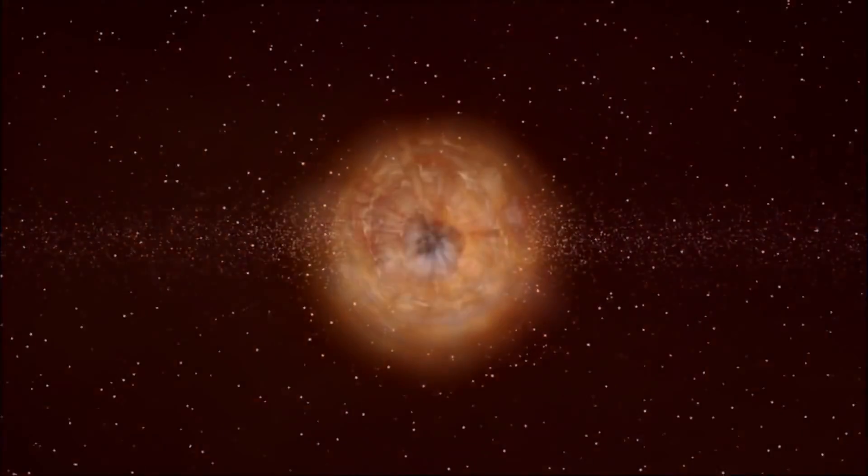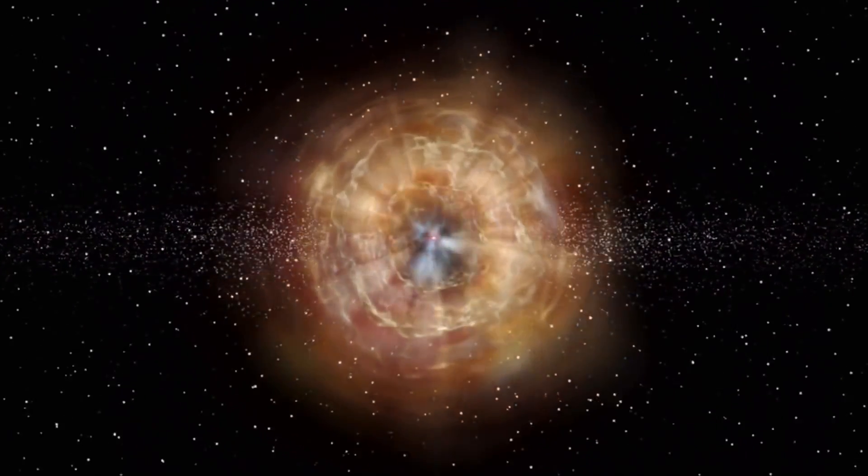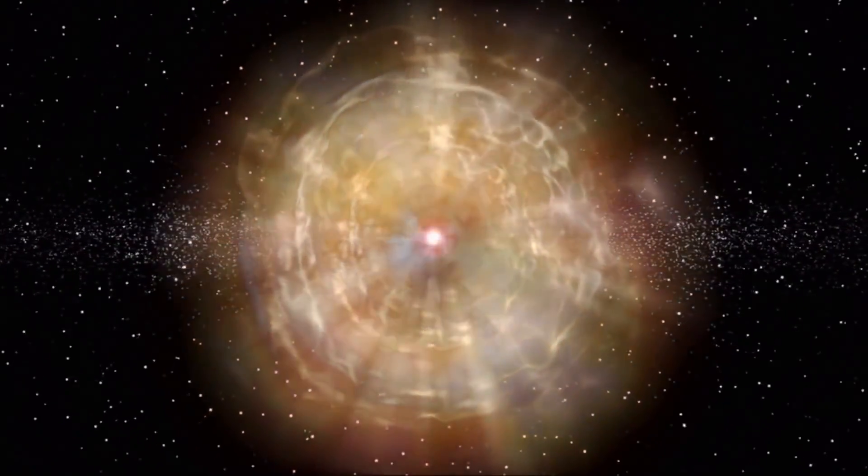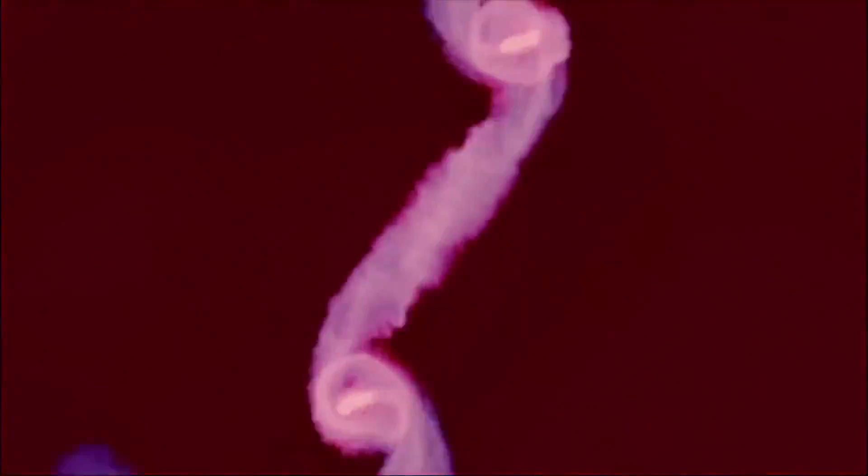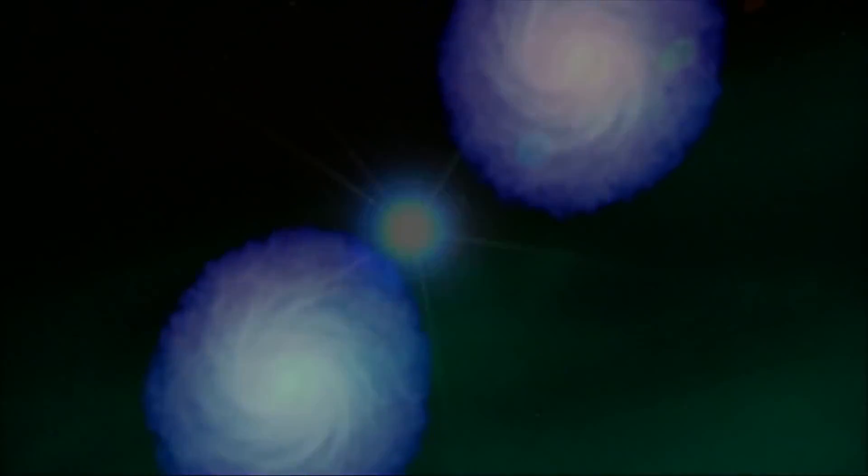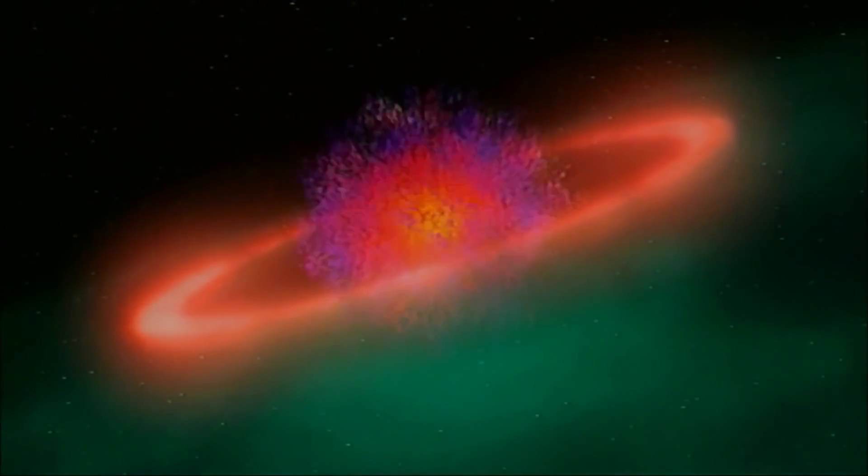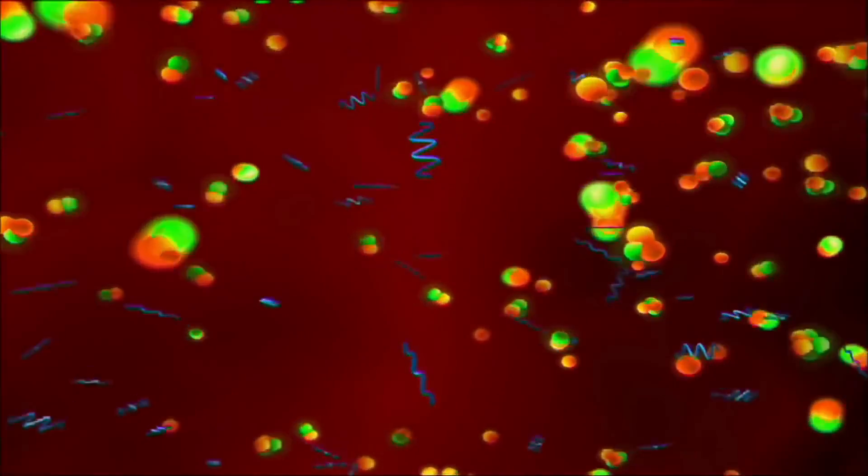As the universe was first forming, scientists believe it was comprised of more than just the regular matter that now makes up everything around us. They believe it had an almost equal amount of antimatter, matter's elusive evil twin. If you go back to the very early universe, it turns out that it was made of matter and antimatter. It turns out that every particle has an antiparticle.